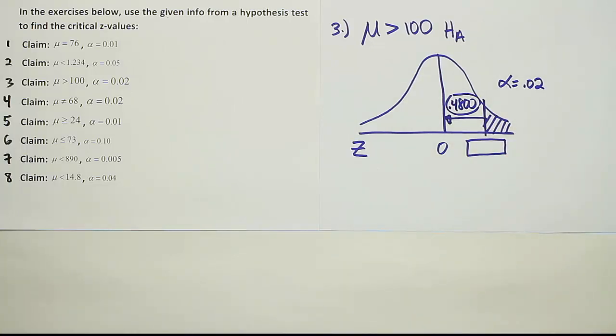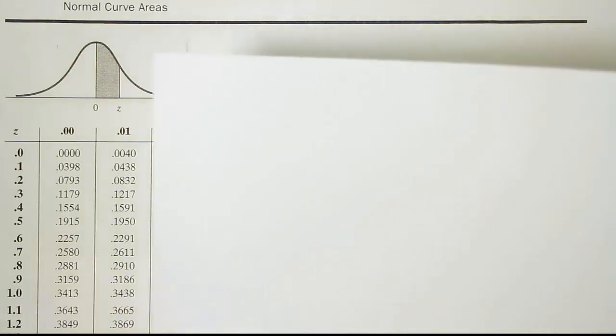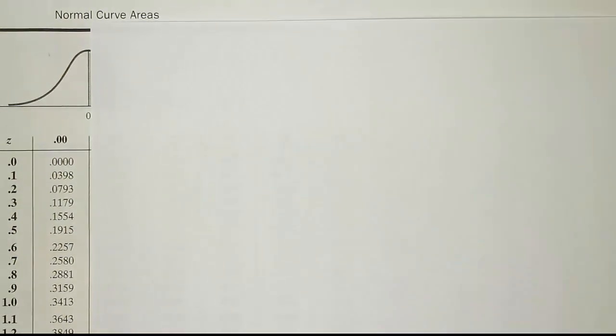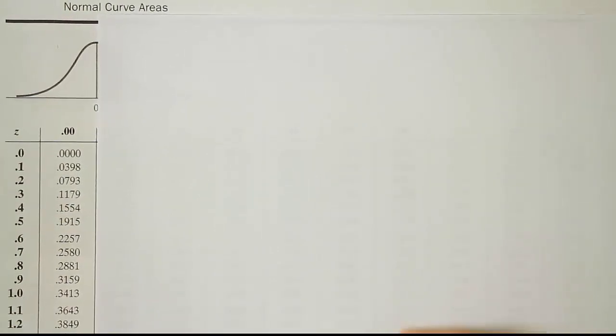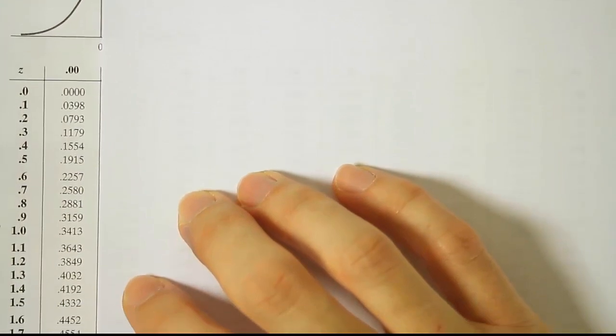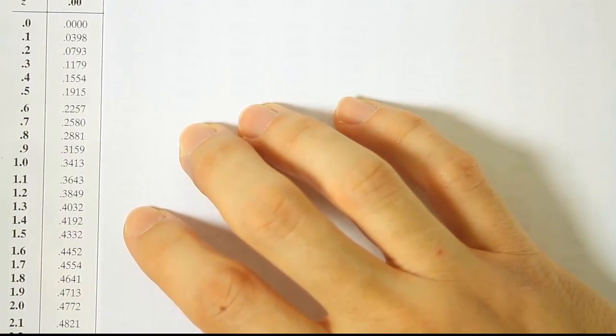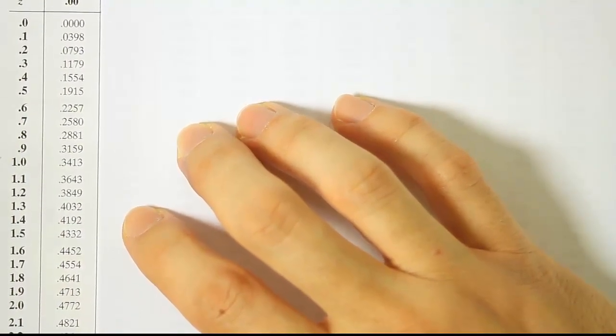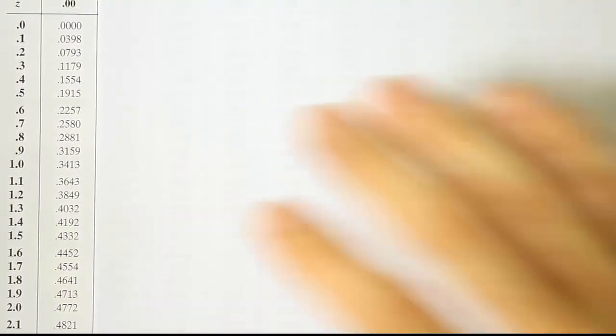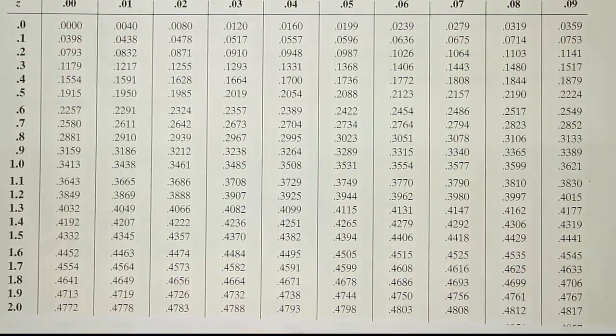Okay, so we're looking for the closest area to 0.4800. Let's look at this first column only at first. Let's try to find the closest thing to 0.4800 in that column. So we're going to scroll down as we look at this. Looks like this row here, the 2.0 row, has the closest thing to it most likely.